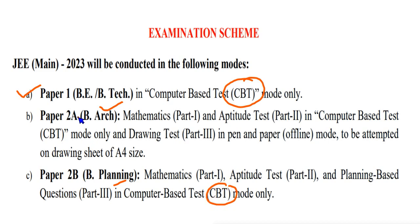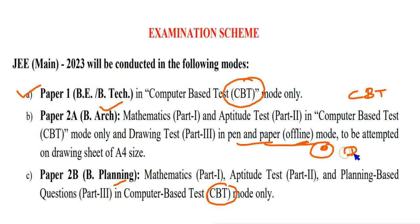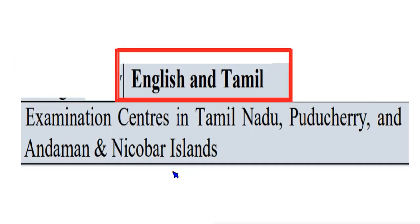If you have to do a test in a computer-based test, it will be offline — that is, pen and paper. You can do it here. There will be two exams in Paper 2. There will be a drawing section. It will be very simple. Most of you have to do BE and BTech — that is CBT. You can do it on a computer.